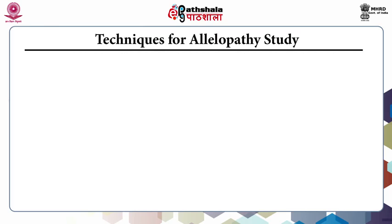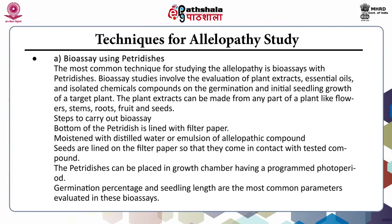Techniques for allelopathy study: First, allelopathic studies can be carried out under in vitro conditions using petri dishes. Bioassay studies involve evaluation of plant extracts, essential oils and isolated chemical compounds on the germination and initial seedling growth of a target plant. The plant extract can be made from any plant part including flower, stem, roots, fruit and seeds. Steps for bioassay: the bottom of the petri dish is lined with filter paper, which is moistened with distilled water; seeds are then placed on the filter paper; the petri dishes are kept in a growth chamber with a programmed photoperiod; on the seventh day, germination percentage and seedling length are evaluated.